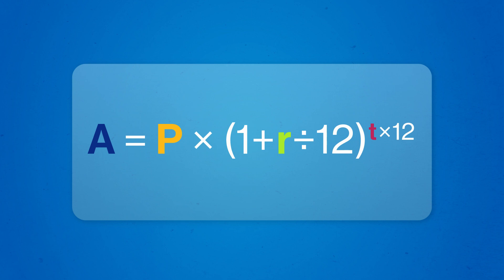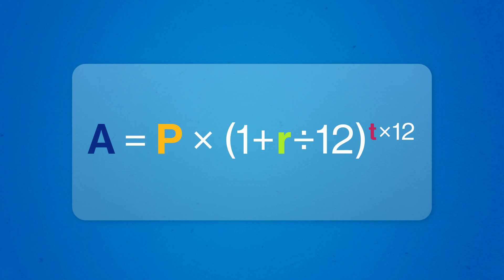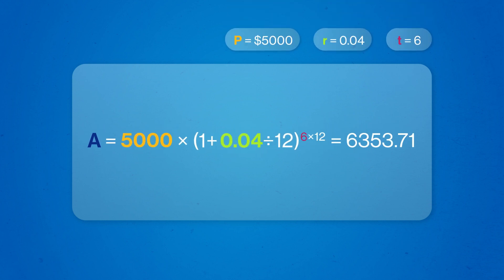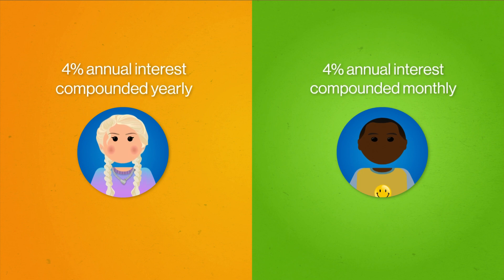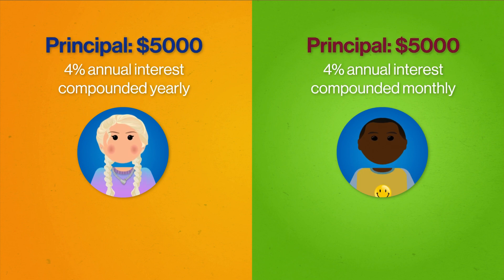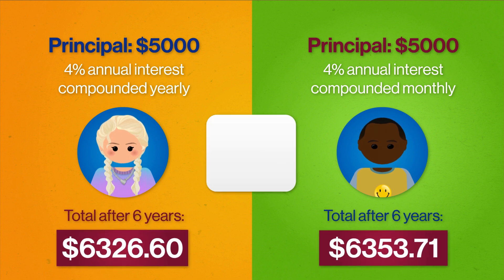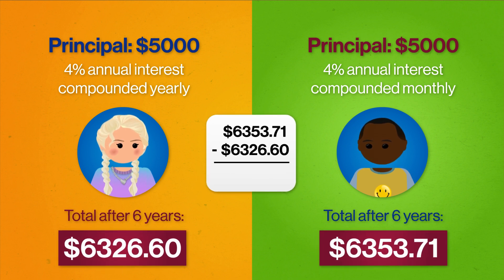We can see this by calculating the future value of Brema's savings account with the new formula. Plugging in the numbers for six years, he would now earn $6,353.71. Remember, he and Alda were offered the same 4% annual compound interest rate with the same $5,000 principal. But with a shorter compounding period, Brema ends up earning $27 more after six years — because his interest gets applied more often, and since compound interest applies the rate to the principal plus all interest earned so far, all that compounding adds up.